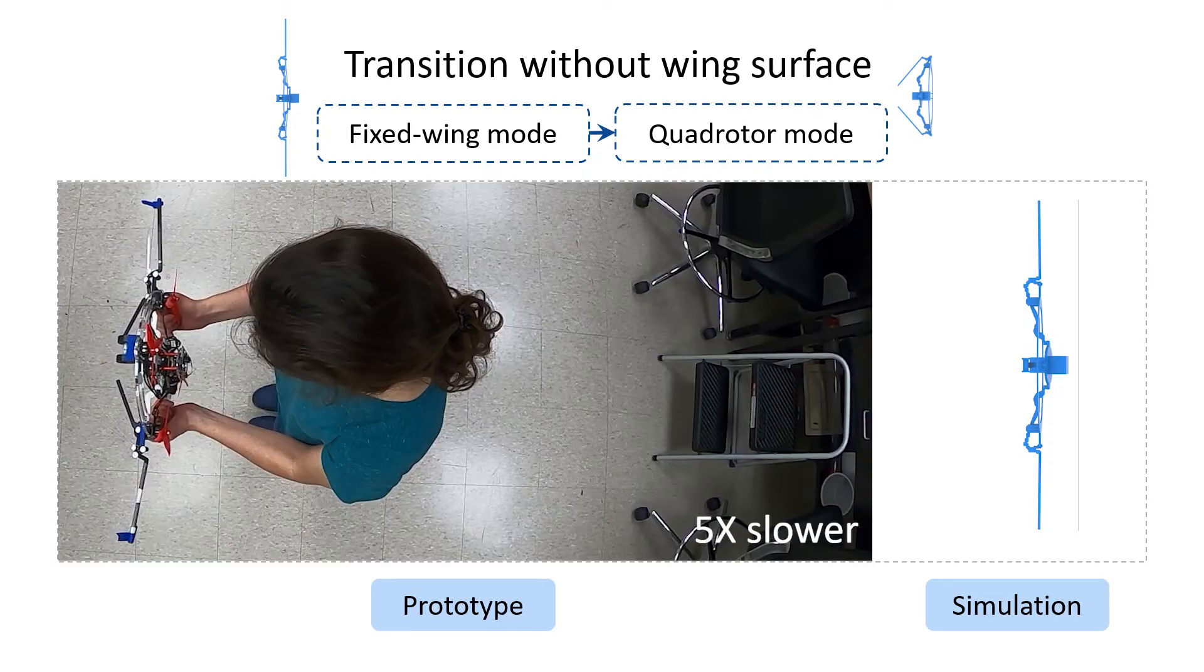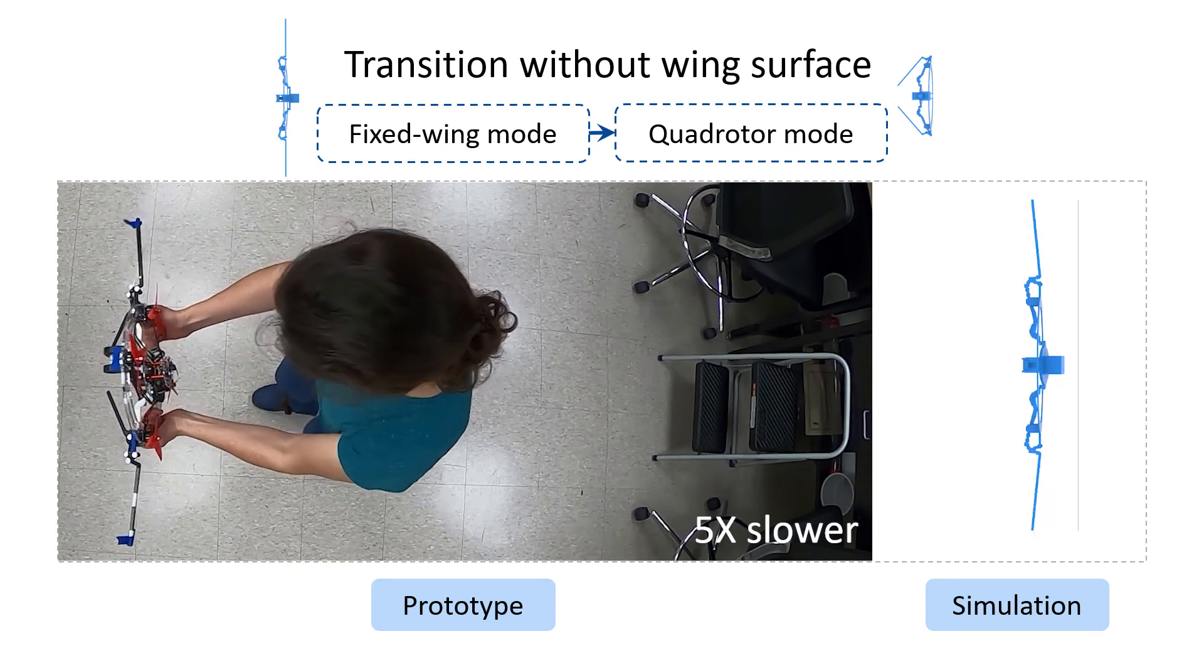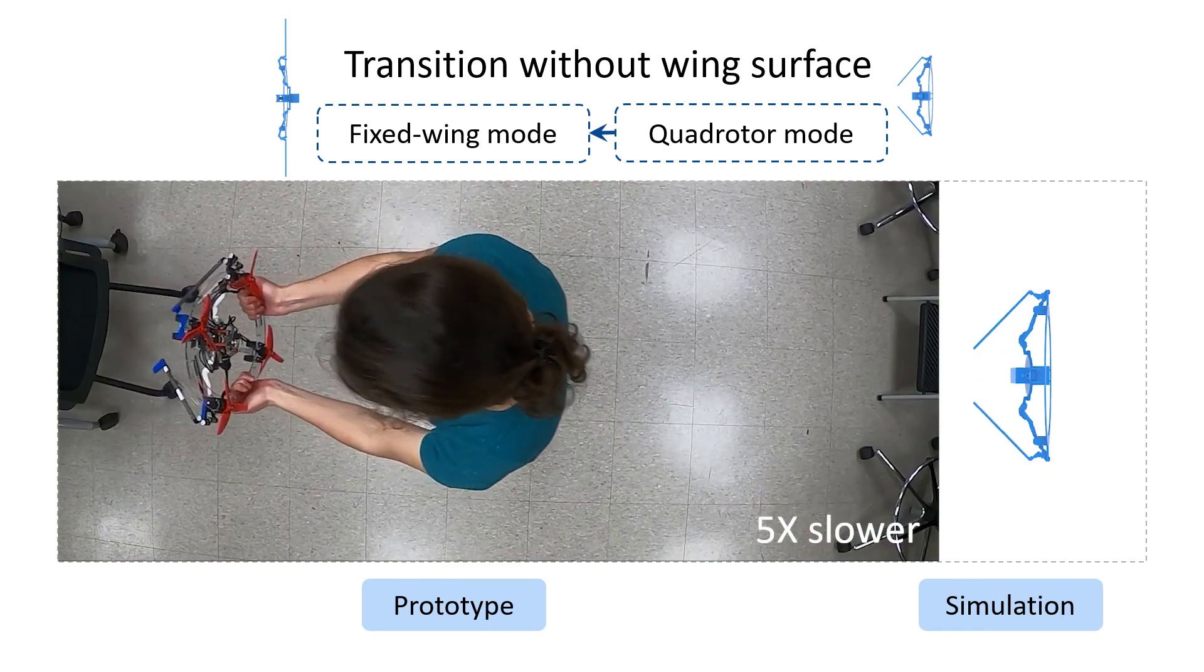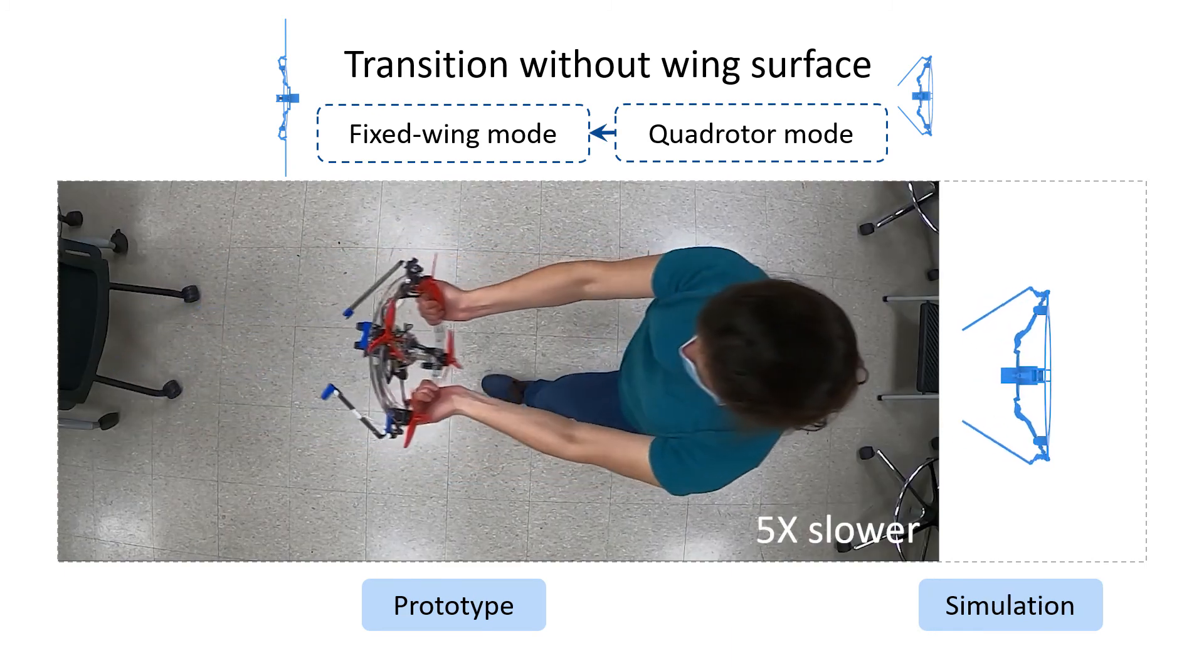We conducted wing tests by applying accelerations to the HAV prototype by hand. The transition from fixed-wing to quadrotor is compared with simulation. And the transition from quadrotor to fixed-wing.